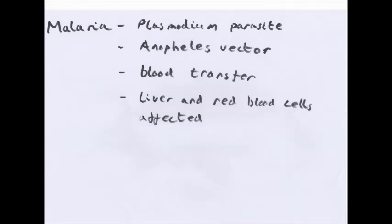Malaria is caused by the plasmodium parasite, which occurs in the female Anopheles mosquito. The Anopheles acts as a vector and passes it on by blood transfer. The female Anopheles mosquito sucks blood from something with plasmodium. The plasmodium develops and migrates to the mosquito's salivary glands. When the mosquito bites a person, the plasmodium enters them, migrates to the liver or red blood cells, infects and multiplies. Then the person has malaria, and the gametes of plasmodium form so they can reproduce and the cycle continues.